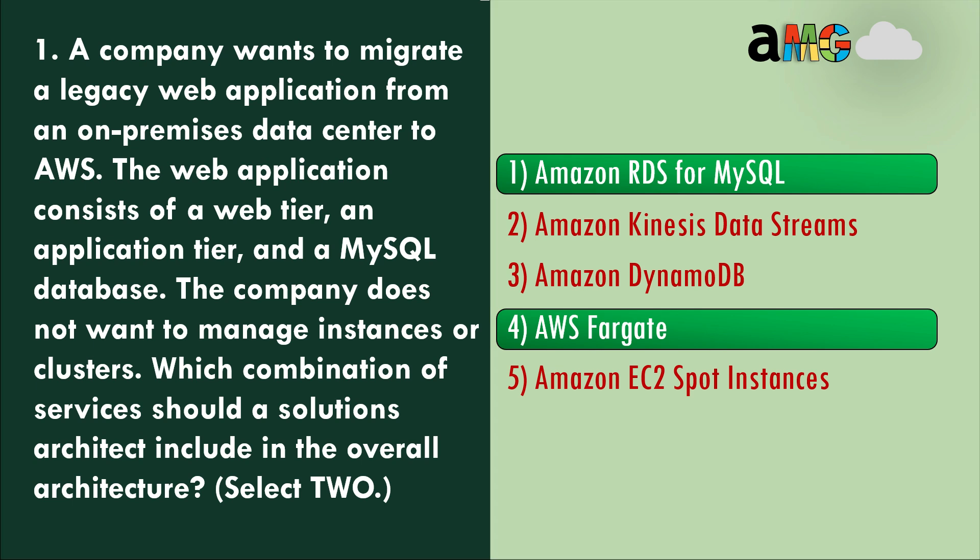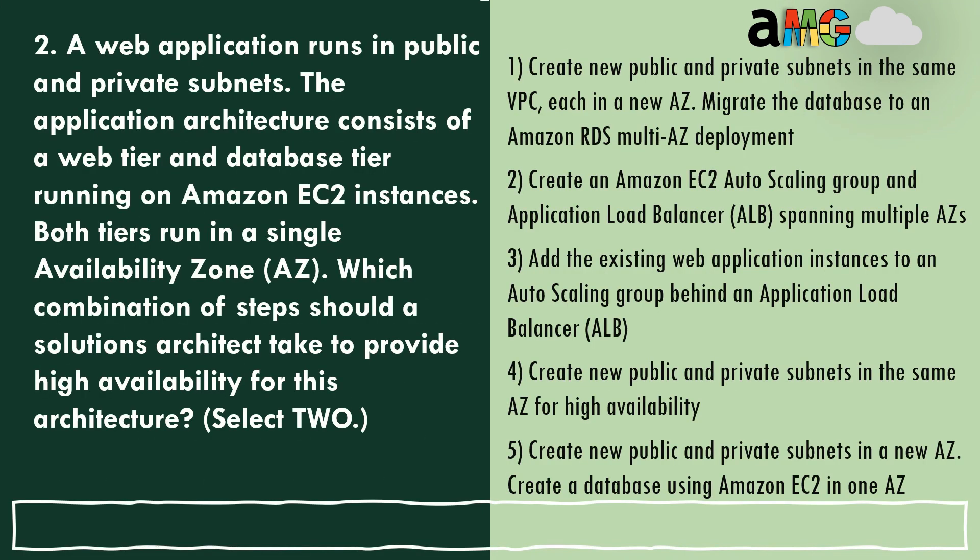Question 2: A web application runs in public and private subnets. The application architecture consists of a web tier and database tier running on Amazon EC2 instances, both running in a single availability zone. Which combination of steps should the solutions architect take to provide high availability for this architecture? Select two options — the options need a little processing, so you can take some more time.